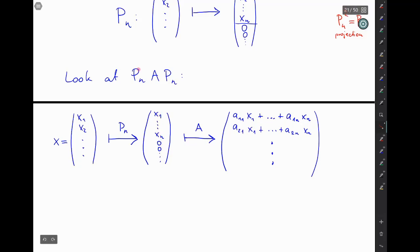And then at the end you again apply Pn, which just takes this vector here, only keeps the first n entries and deletes the rest, meaning putting it to zero. So what's happening?